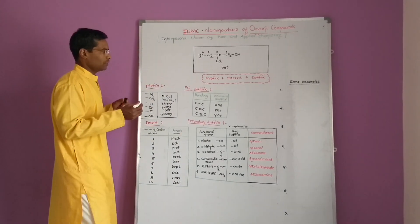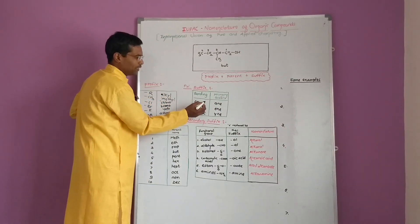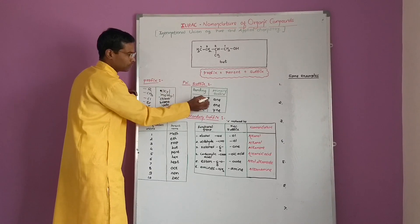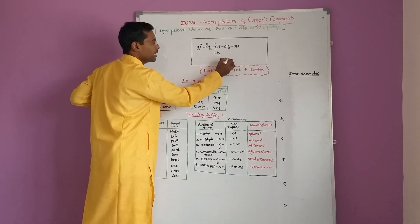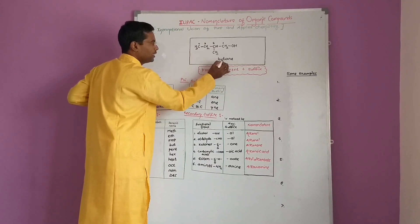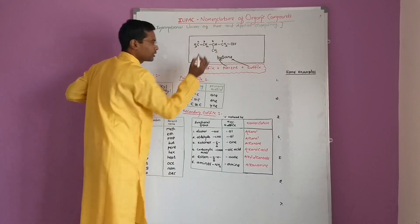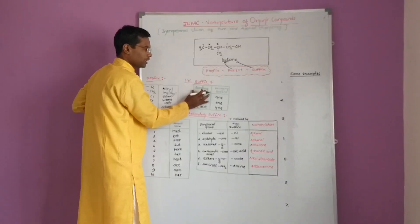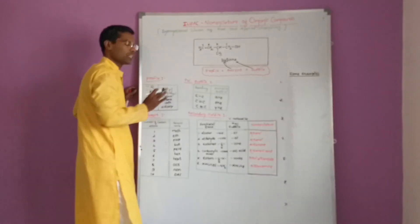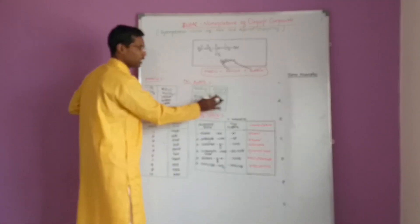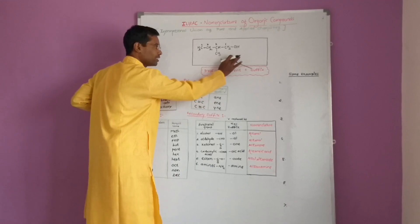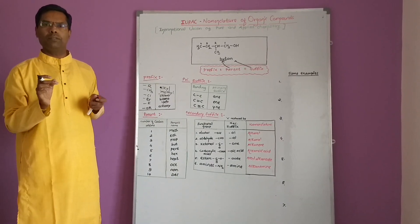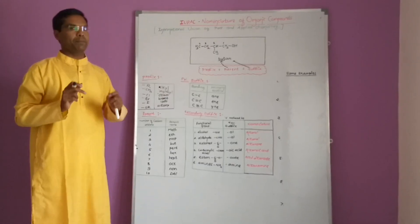Now the suffix. Suffix is of two types: primary suffix and secondary suffix. Since all carbons have single bonds in this compound, carbon-carbon single bond means the primary suffix is ANE. The primary suffix ANE indicates the actual bonding in the longest chain — single bonds. Now replace the E. The E in ANE is replaced by the secondary suffix, which is given from the functional group. First, identify the functional group.